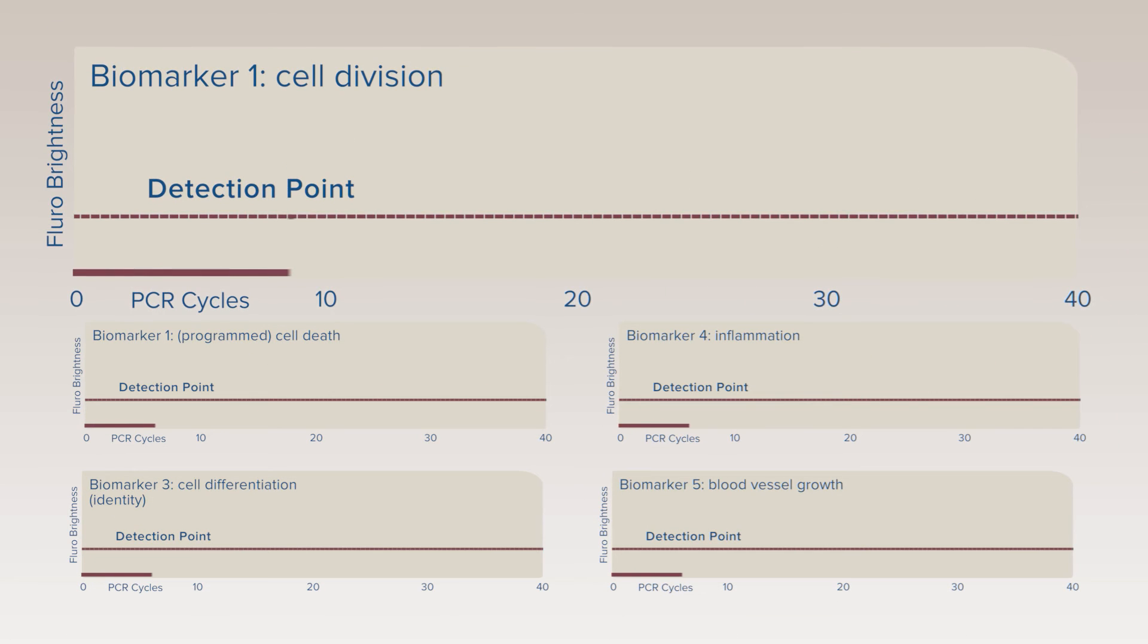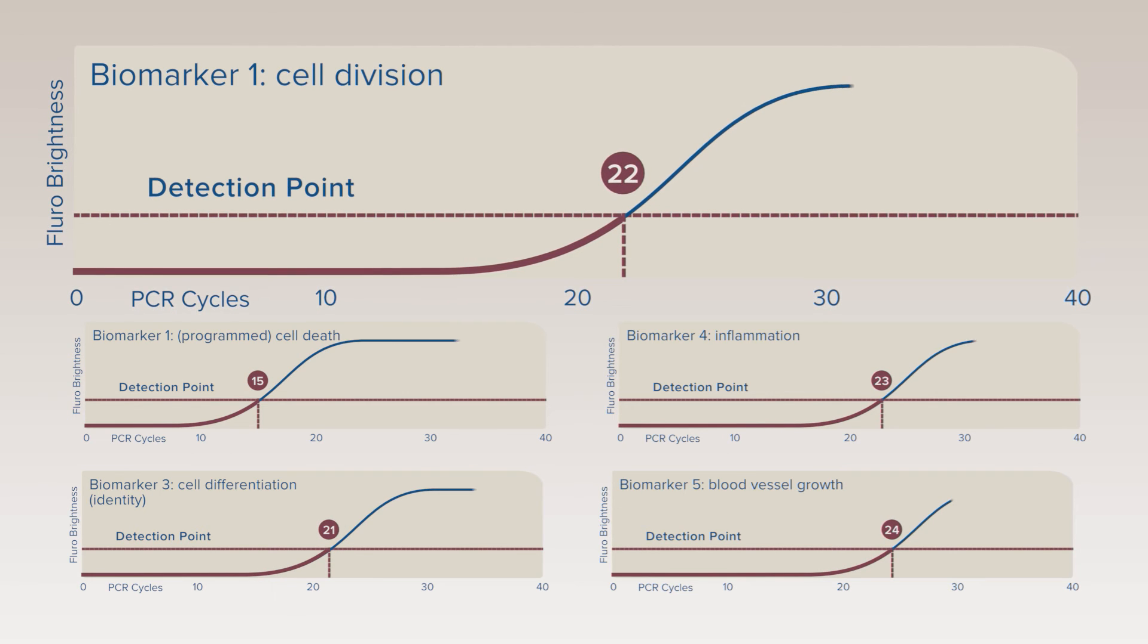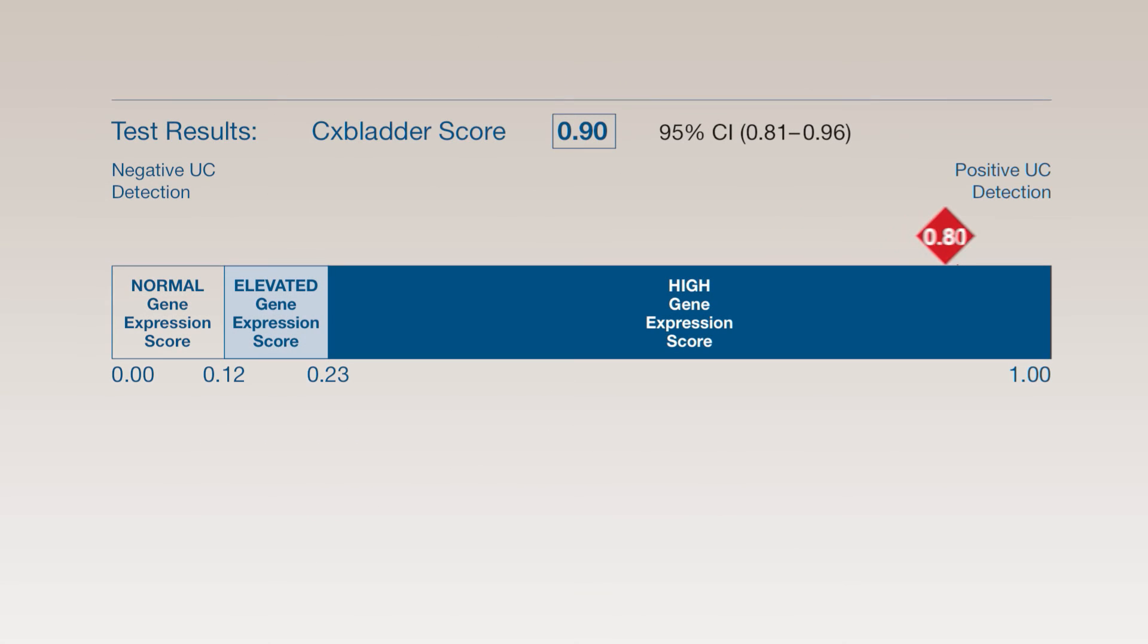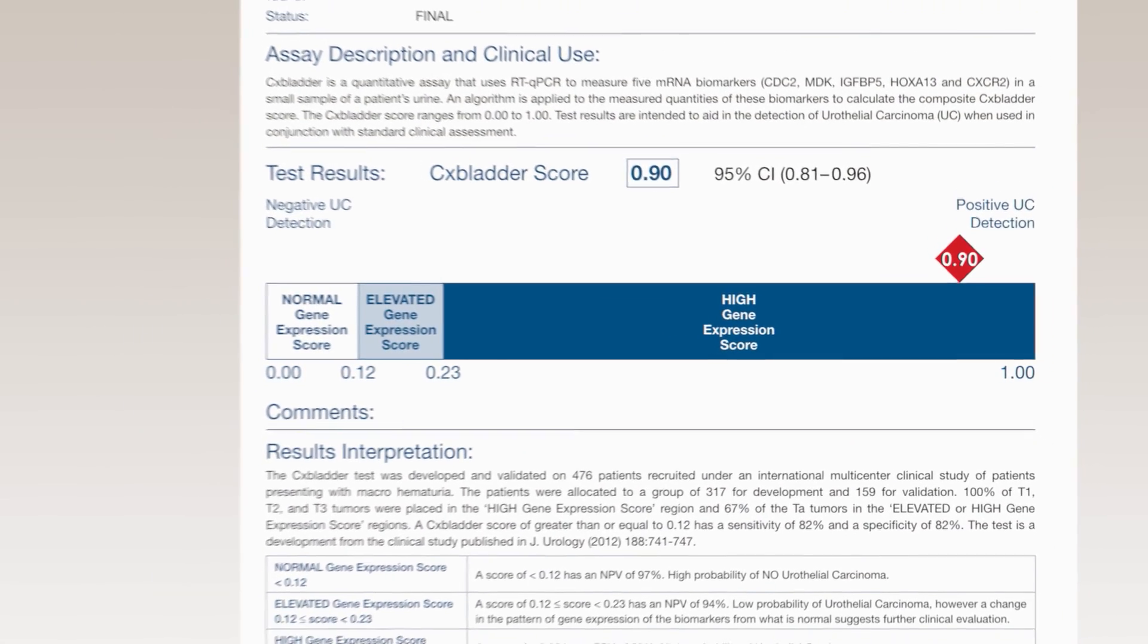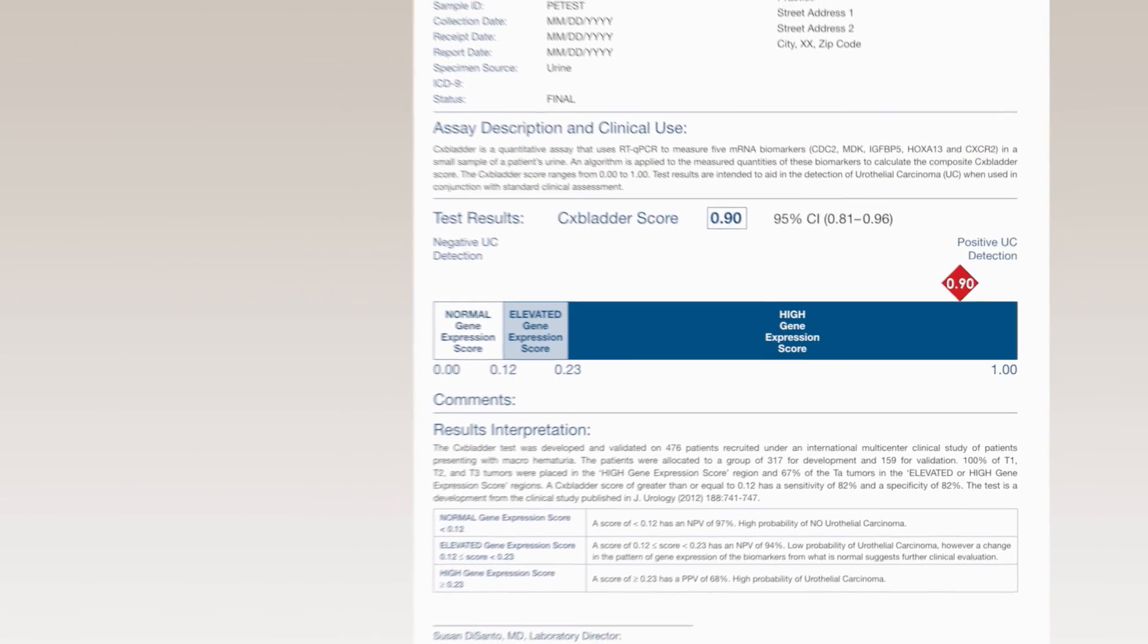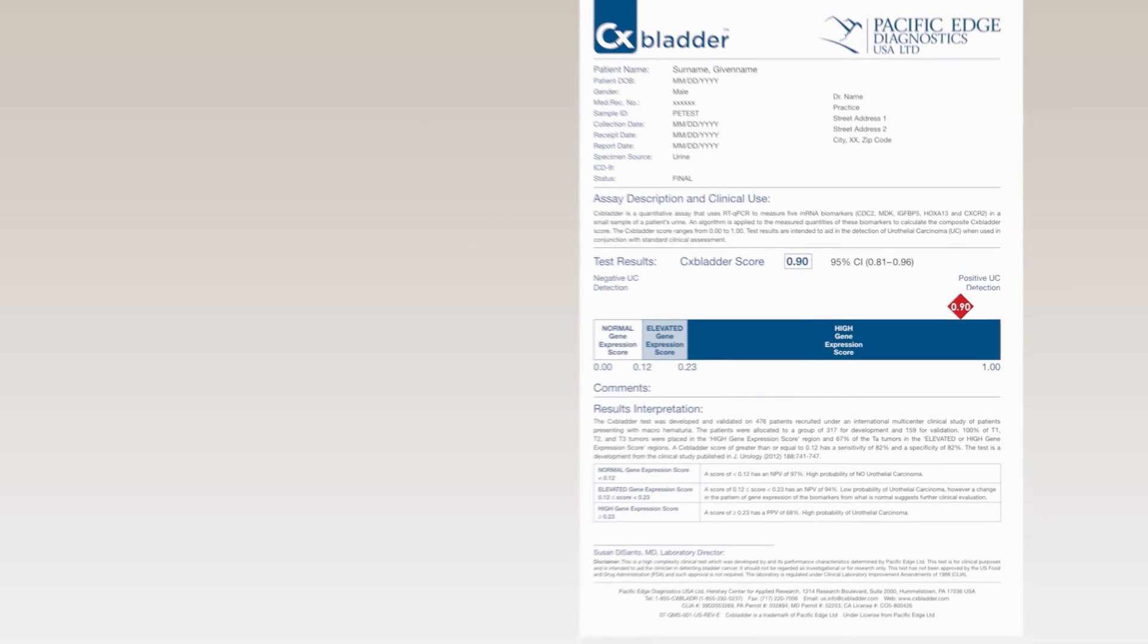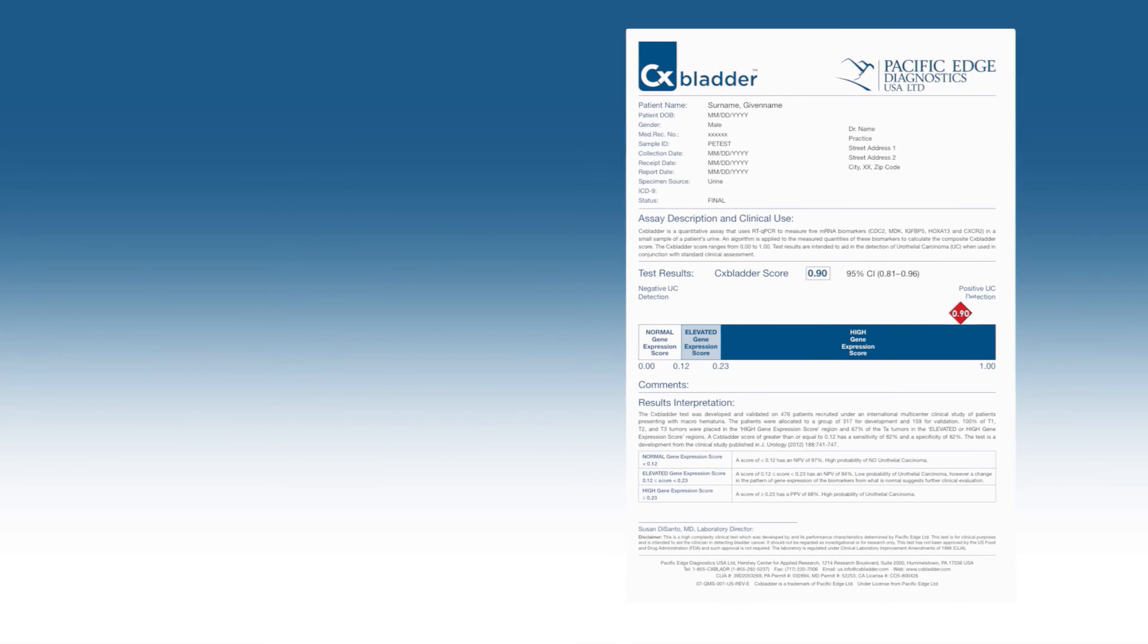In the CX Bladder test, each of the five biomarker genes is measured by a different probe. It is the quantity of these biomarkers in relation to each other that we use to calculate a CX Bladder score. The CX Bladder test score provides actionable results that can make a meaningful difference in a patient's diagnosis and treatment.